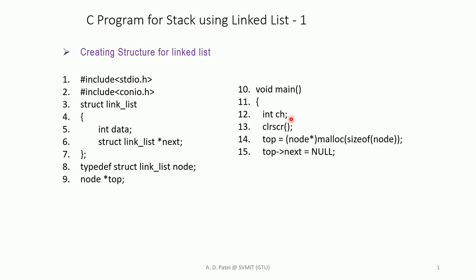In the main function we have declared an integer ch which will be used to provide the user a menu for push, pop, and display. Then clrscr will clear the screen. Next, top = (node*) malloc(sizeof(node)) — this line will dynamically allocate memory to top. sizeof(node) calculates the size of the structure and malloc allocates that memory, while the node* cast makes the output a pointer.